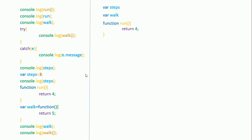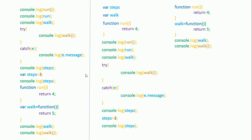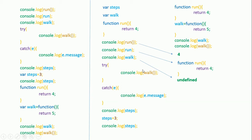The key point here is that function declarations are moved to the top and compiled first. The JavaScript compiler checks for any function declaration and moves it above all other code. So function 'run' is compiled at the beginning. When console.log(run) executes, function run is already defined and returns four. The variable 'work' is still undefined at that point, so printing work gives undefined. Calling work as a function throws an exception — 'work is not a function' — because no function has been assigned to it yet.